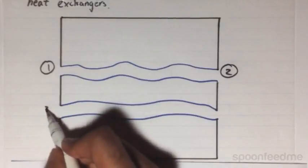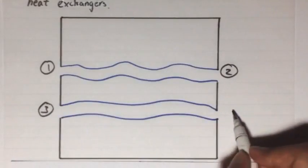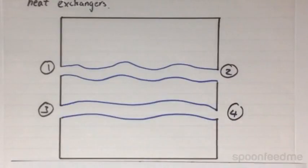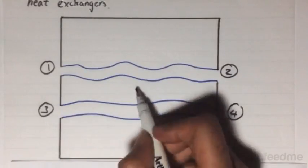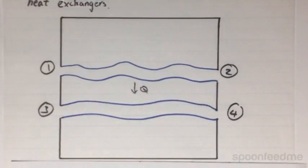The other pipe enters at state 3 here and exits at state 4 here, and contains the other fluid. What a heat exchanger does is heat is transferred from one fluid to another.